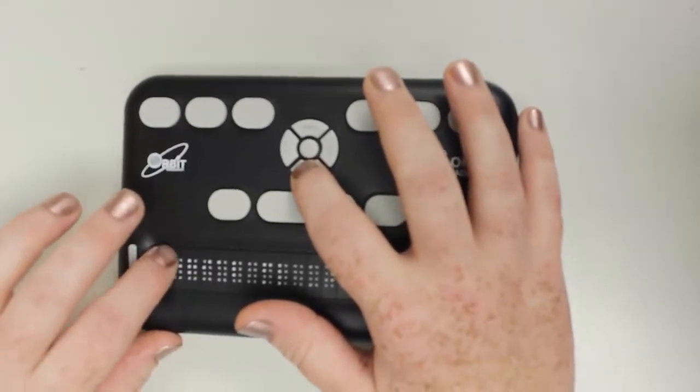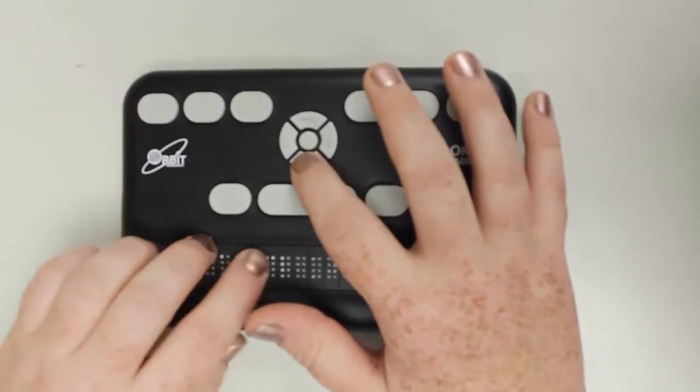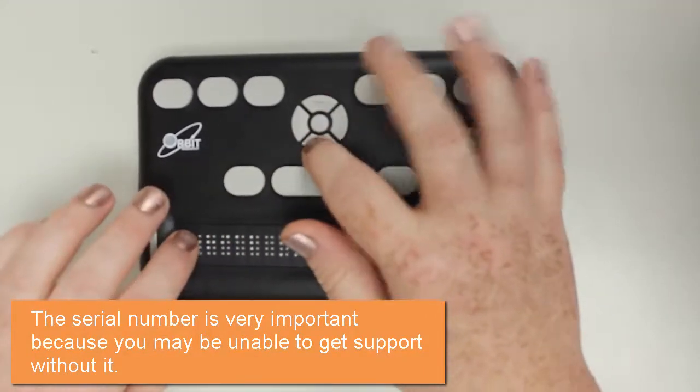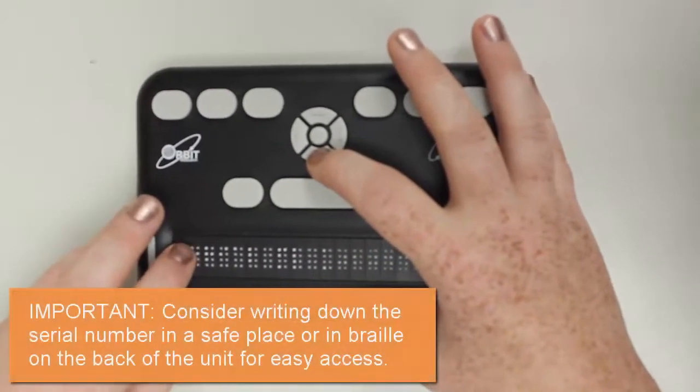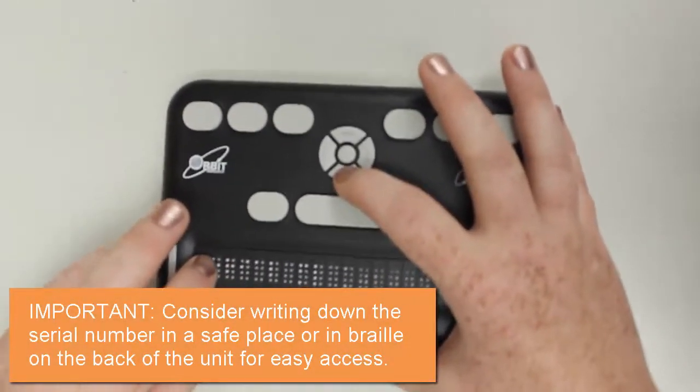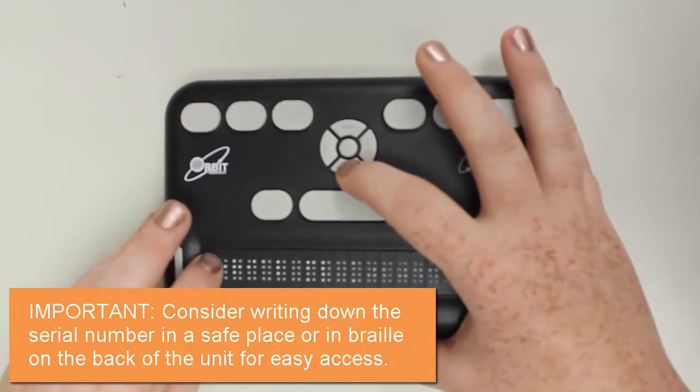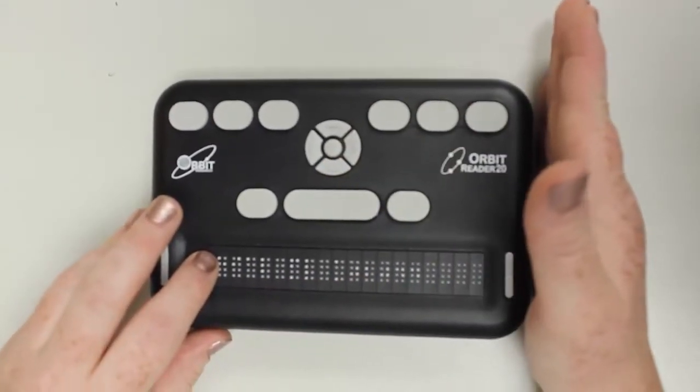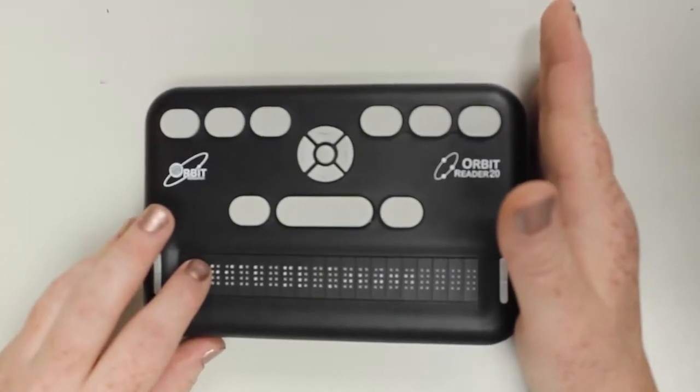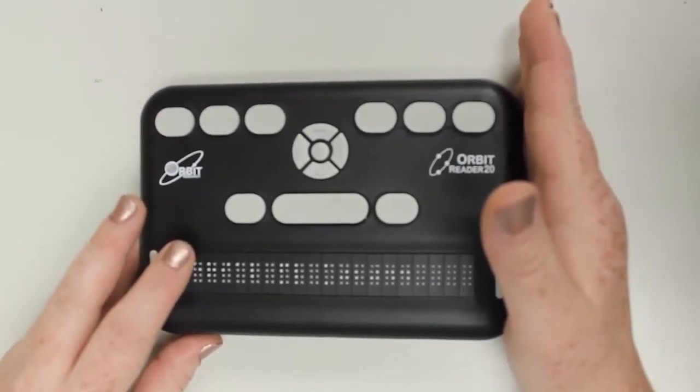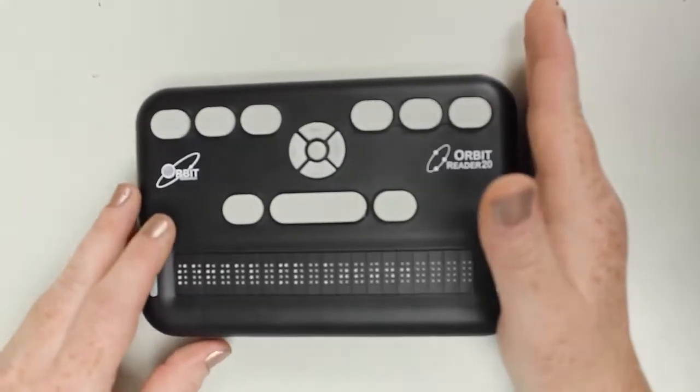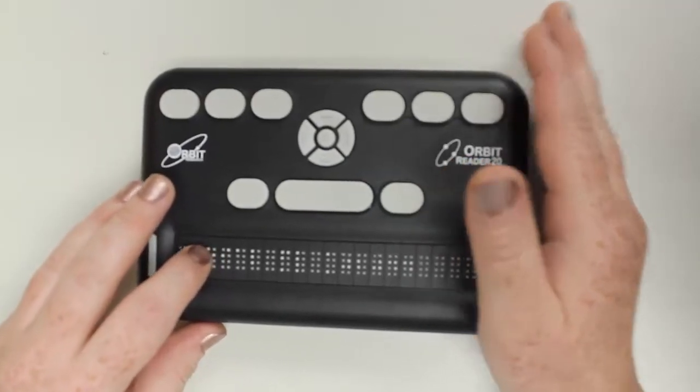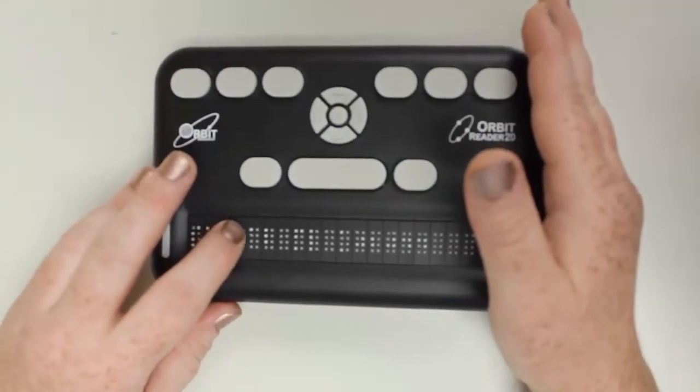The next thing that they may ask you for is a serial number, and that is here. So that is the next choice in the menu. I would advise you to write down the serial number either in Braille or in a file somewhere that you can access that is not on this device. If the unit isn't working and you need the serial number, there's no way you can get to it. It's kind of like this vicious circle. You need the serial number to get it fixed, but you can't get it fixed to get the serial number off of it.